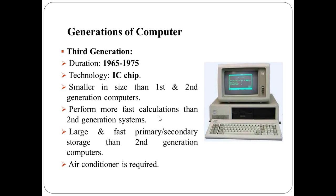The third generation computers had a duration from 1965 to 1975. They were characterized by the use of Integrated Circuits (ICs). They consumed less power and required lower maintenance compared to their predecessors. High level languages were used for programming. The computation time was in nanoseconds, and these computers were produced commercially.